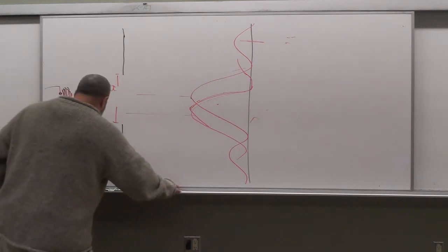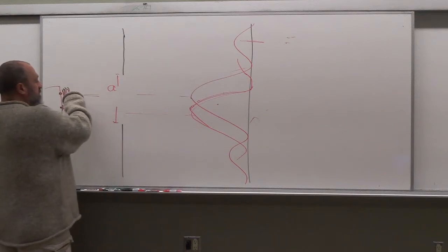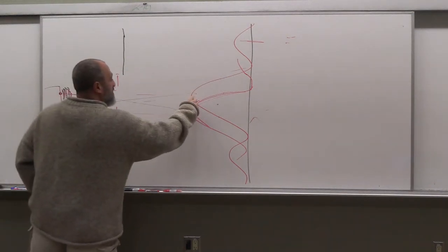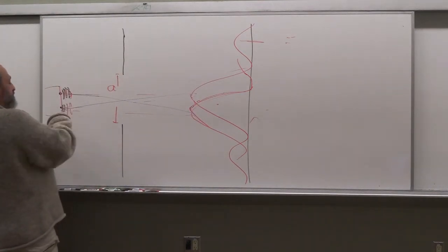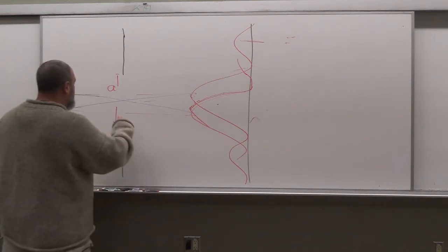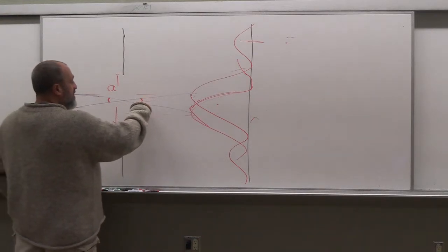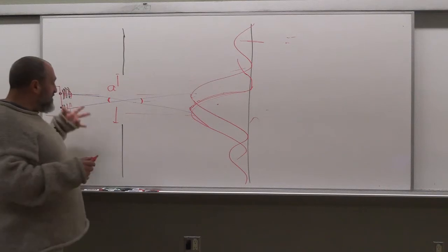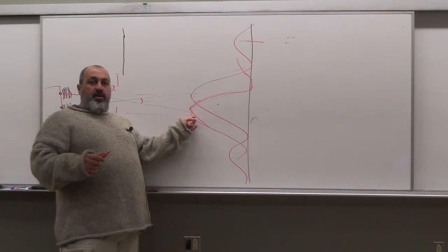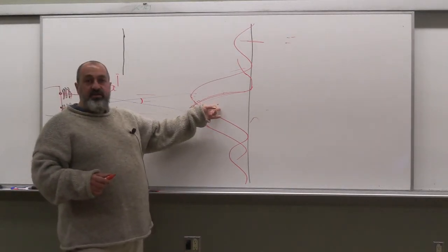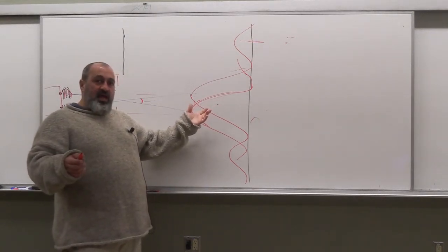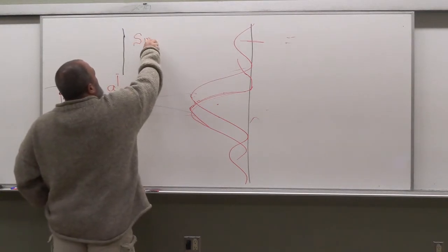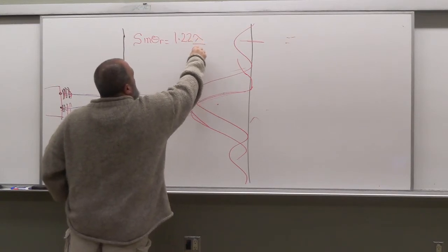Rayleigh did some work on this and said that when you are able to resolve the two peaks, they will meet at half height. For a circular aperture, the angular resolution — the Rayleigh angle — is given by sin theta_r equal to 1.22 lambda over the aperture width. So the angular resolution for you to be able to tell two objects apart is when the peaks meet at half height. For a rectangular aperture, you can figure out what the resolution angle will be between the two sources before you lose resolution.